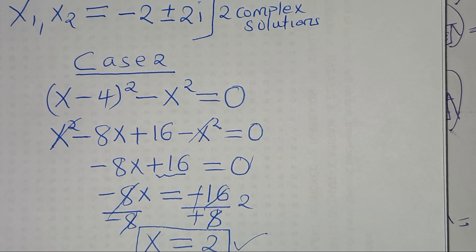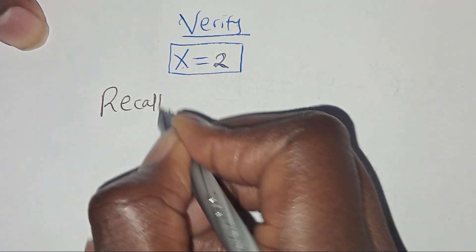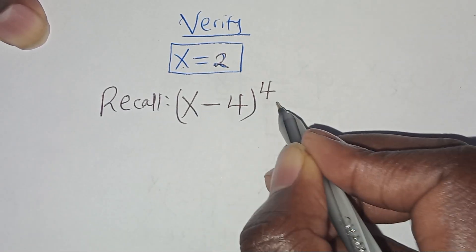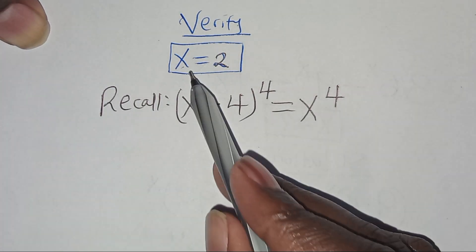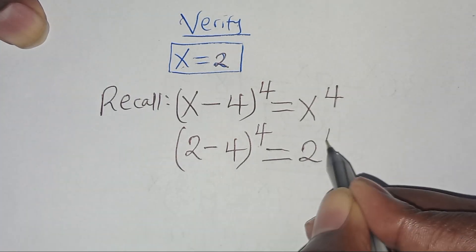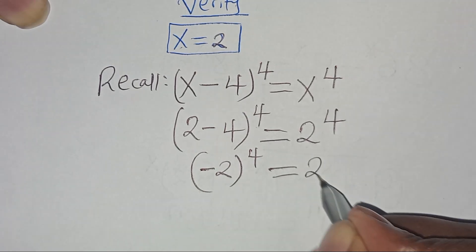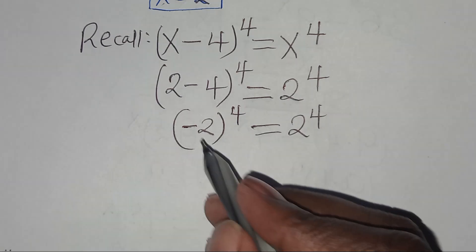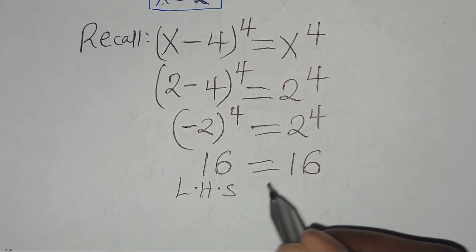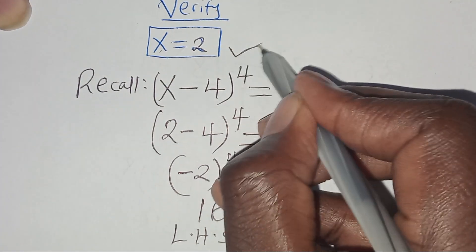Let's verify that x equals 2 satisfies the original equation (x minus 4)⁴ = x⁴. Substituting x equals 2: (2 minus 4)⁴ = 2⁴, which gives (−2)⁴ = 2⁴, and both equal 16. The left hand side equals the right hand side, confirming that x equals 2 satisfies the equation.